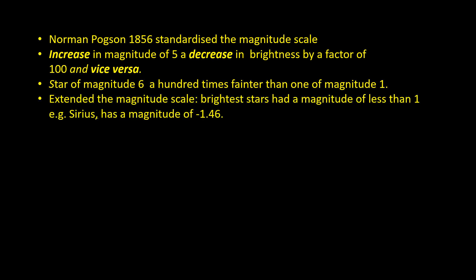As the science of measuring the brightness of objects developed, it became clear that there was more than a hundredfold variation between the brightest and the faintest stars. So the magnitude scale had to be extended so that the brightest stars had a magnitude of less than 1. The brightest star in the sky, Sirius, has a magnitude of minus 1.46. Stars too faint to be seen with the naked eye have a magnitude value greater than 6.